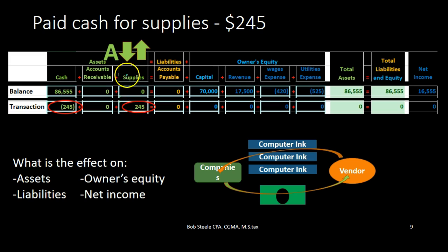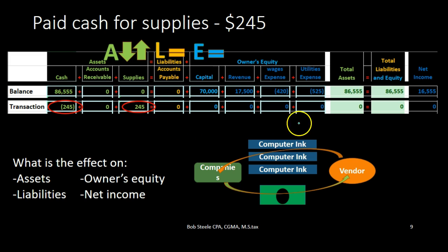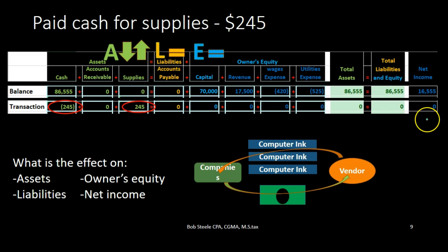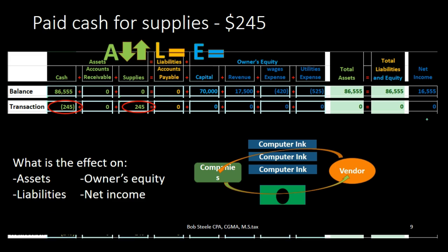This is an unusual transaction in which assets went up and assets went back down. One reason why the accounting equation is not quite as effective as debits and credits is because if we just say what happened to the accounting equation, we'd say nothing happened to assets, nothing happened to liabilities, nothing happened to equity — although two accounts were impacted. Cash went down and supplies went up, so two asset accounts were affected with no overall impact on the accounting equation, liabilities, or equity — and therefore no impact on net income.